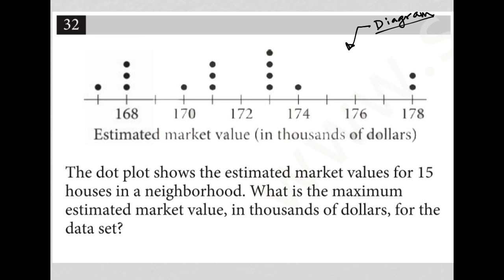We obviously have a dot plot here where the axis is estimated market value in thousands of dollars, which just basically means this 168 here really means 168,000 and so on and so forth.